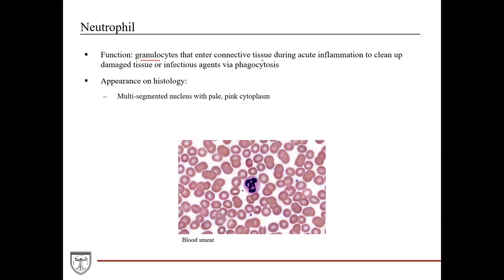Neutrophils are granulocytes that enter connective tissue during acute inflammation — they're actually a hallmark of acute inflammation and essentially the first phase of the cleanup crew. They clean up damaged tissue or infectious agents via phagocytosis, engulfing tissue debris or bacteria. Their histological appearance features a multi-segmented nucleus, which is their hallmark, with bridging portions between segments — a very complex nucleus structure. They have a pale or pink cytoplasm, as seen here on a peripheral blood smear.